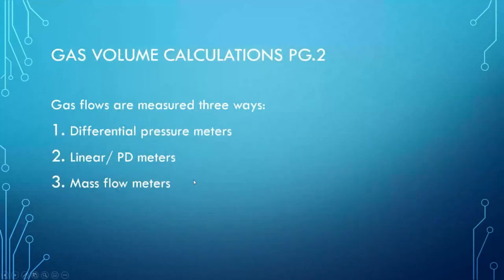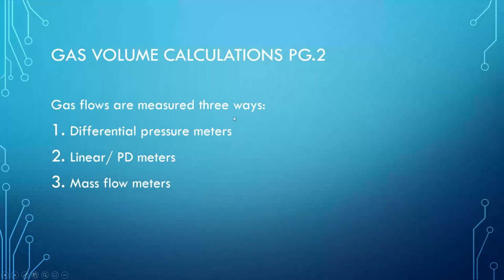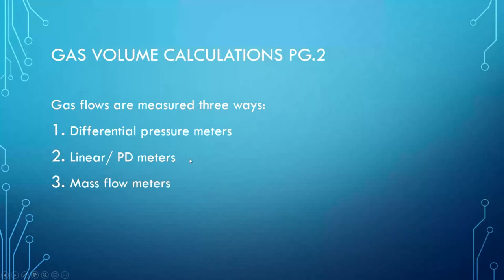For gas volume calculations, gas flows are measured basically three ways: we can measure gas with differential pressure meters, we can use linear or positive displacement meters, or we can use mass flow meters. That covers the whole gamut of different types of flow measurement technology. Depending on which ones we pick, we may have to use multiple different meters to meet the applicable standards.